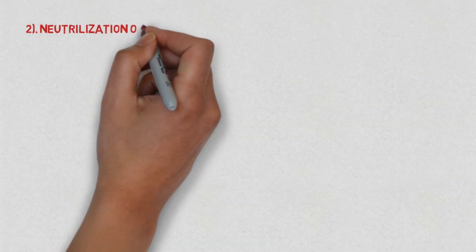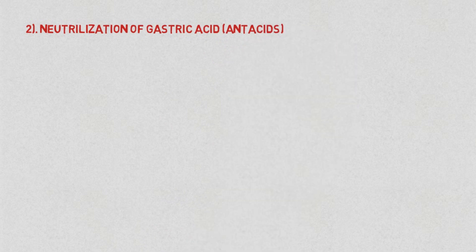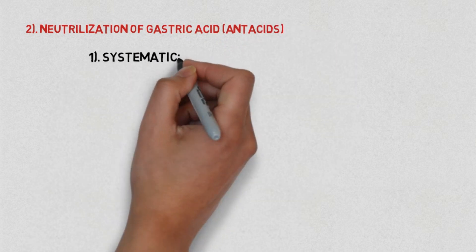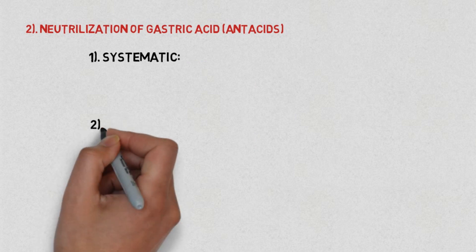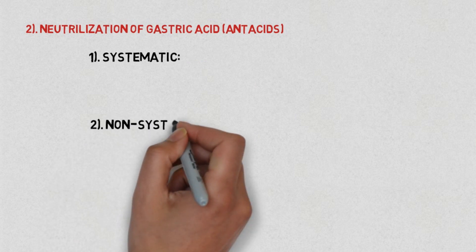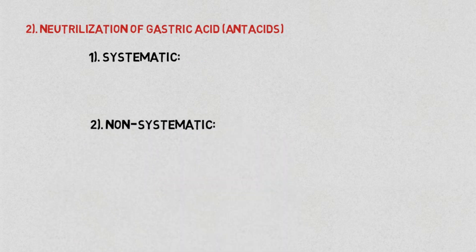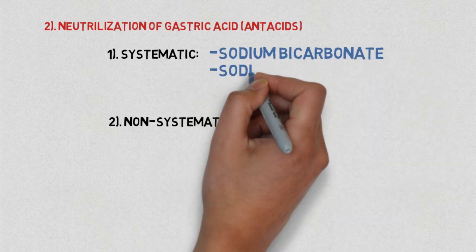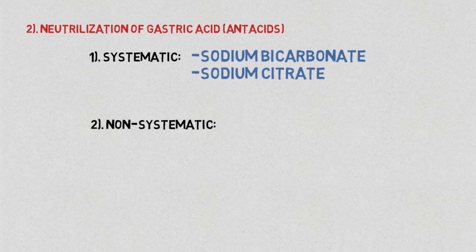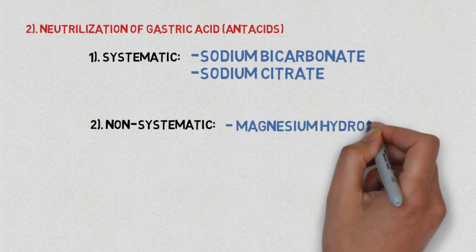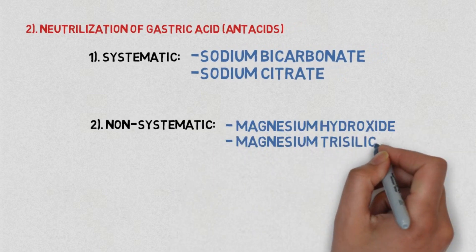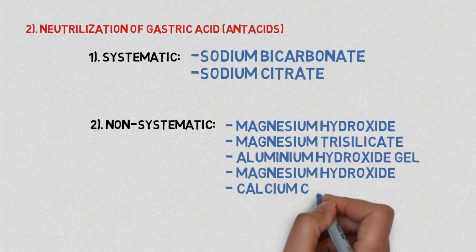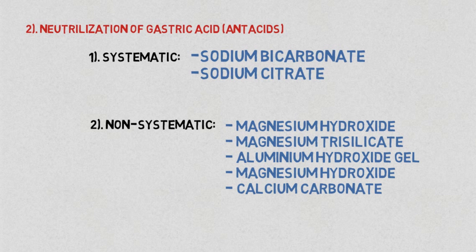The next main topic of pharmacological treatment: we have neutralization of gastric acid, which is also known as antacids. They are divided mainly into two types: systemic and non-systemic. The drugs which fall under systemic are sodium bicarbonate and sodium citrate. Whereas in non-systemic the drugs are magnesium hydroxide, magnesium trisilicate, aluminium hydroxide gel, magnesium hydroxide, and calcium carbonate.